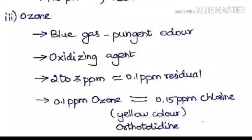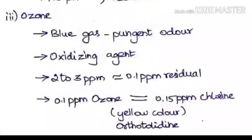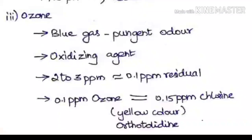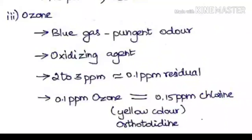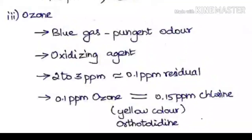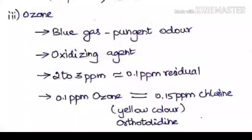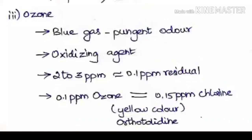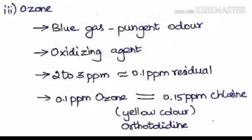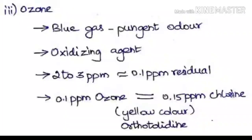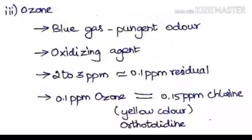Ozone is a great oxidizing agent. If we use nearly 2 to 3 ppm, it will have a residual of nearly 0.1 ppm. When this residue remains in the water it will be a preventive measure for disinfection even in the distribution system. 0.1 ppm ozone is nearly equal to the effect of 0.15 ppm chlorine, so the intensity of the yellow color visible in the orthotolidine test will be the same for both.